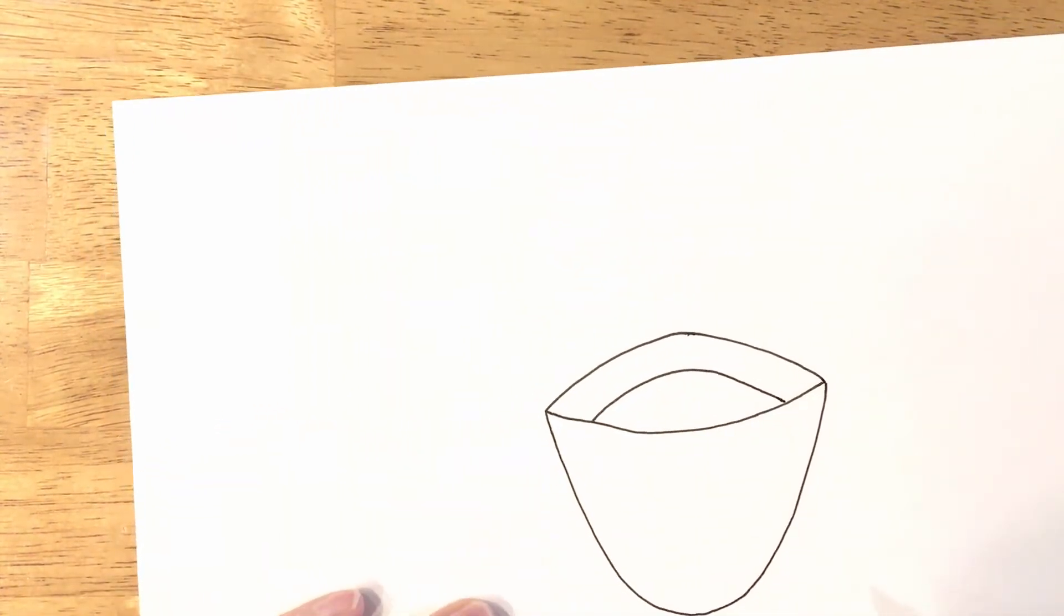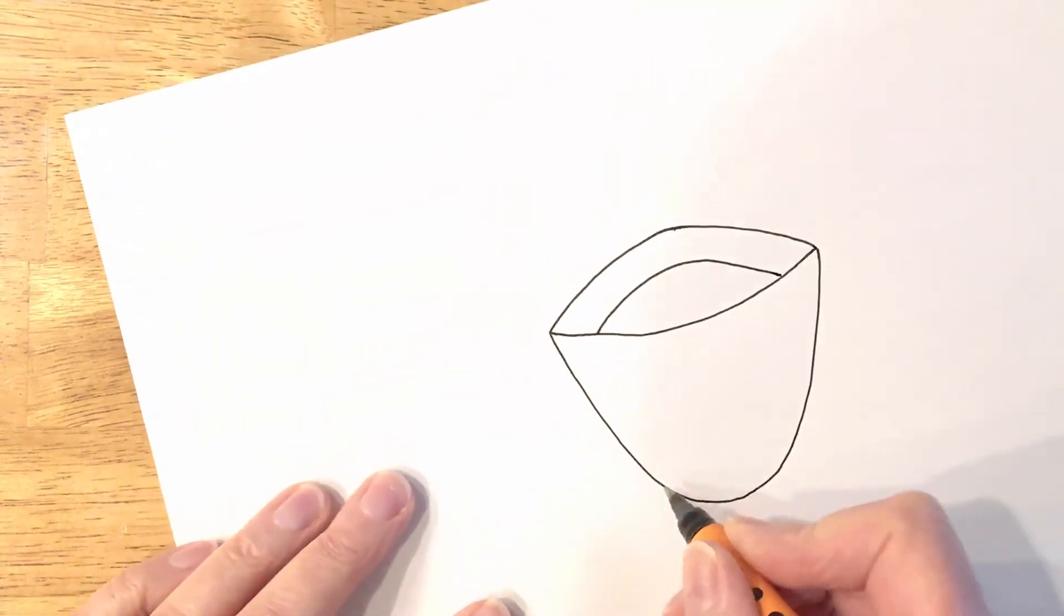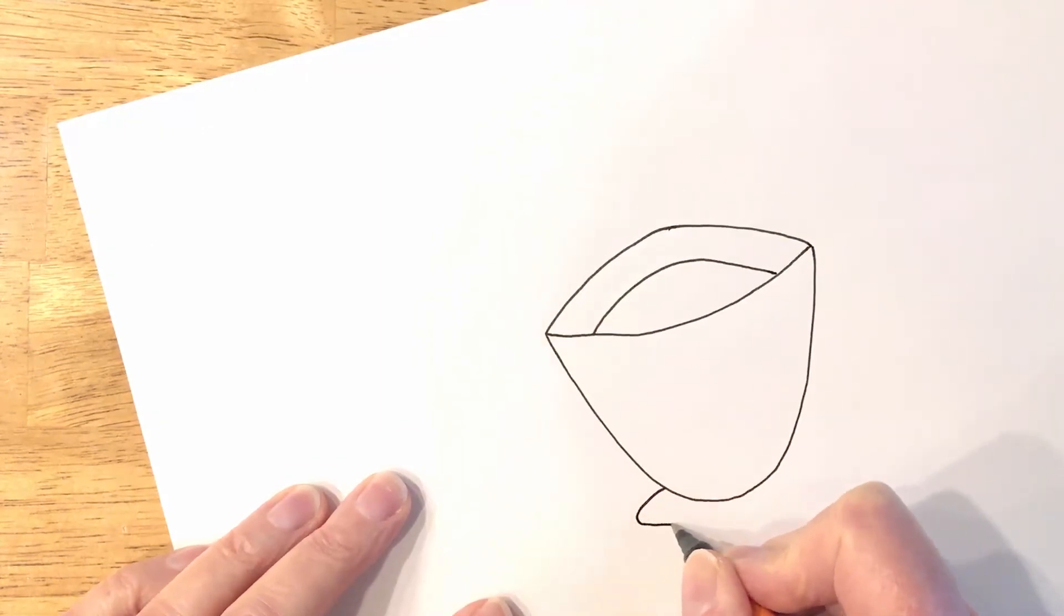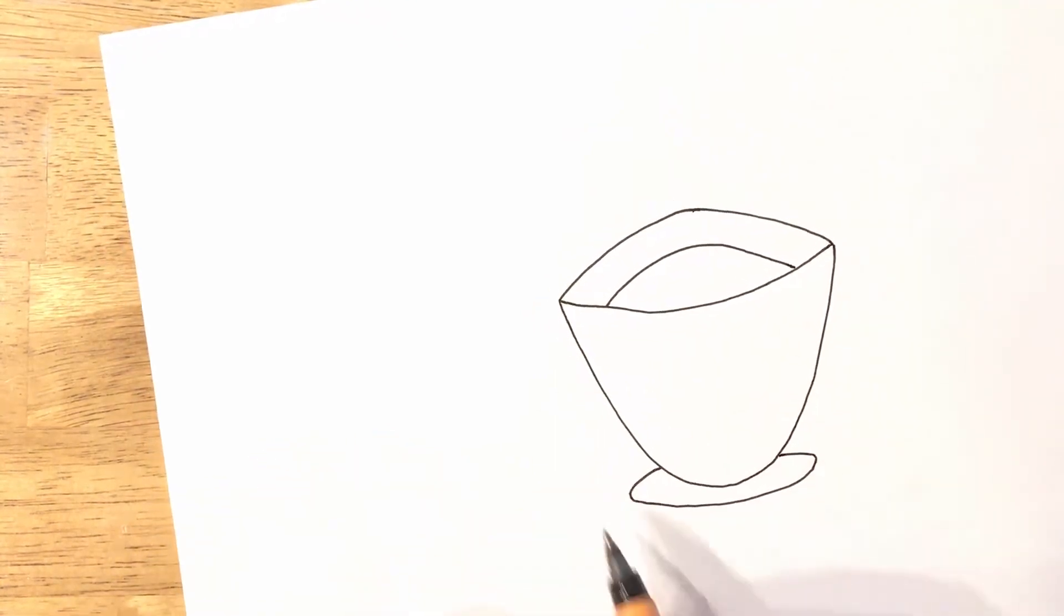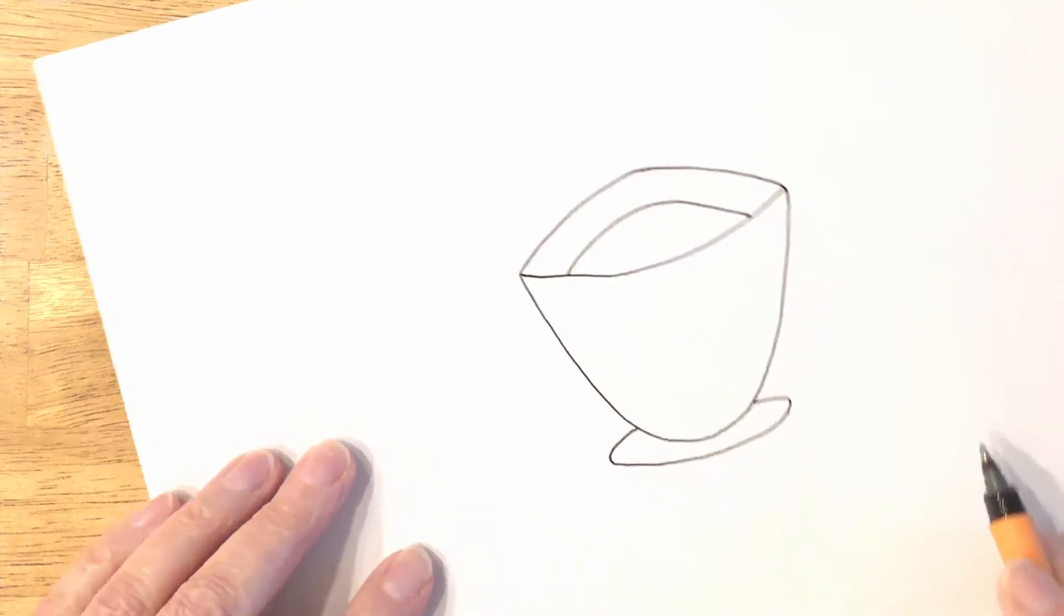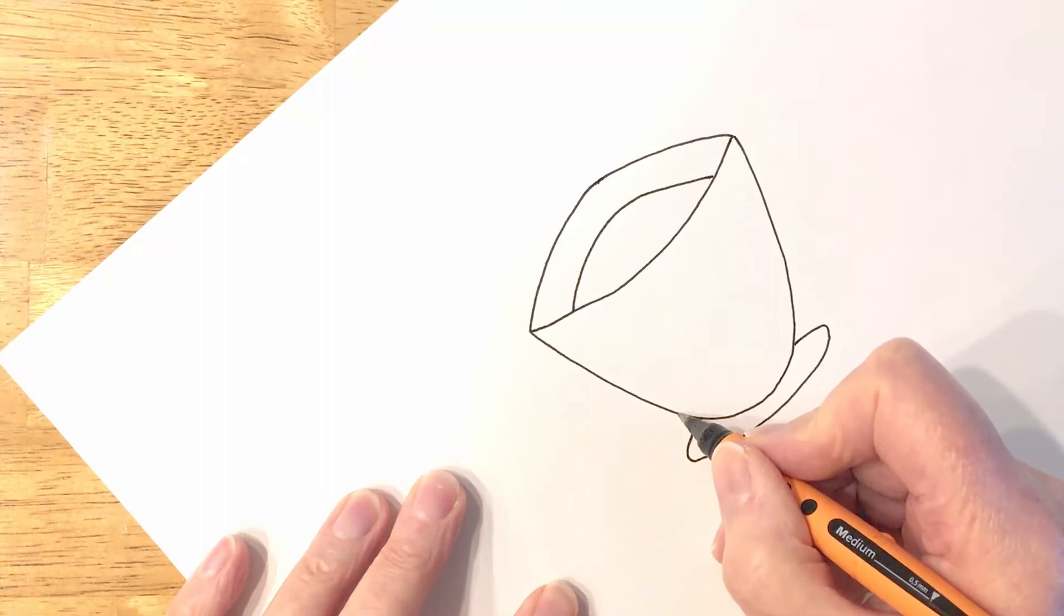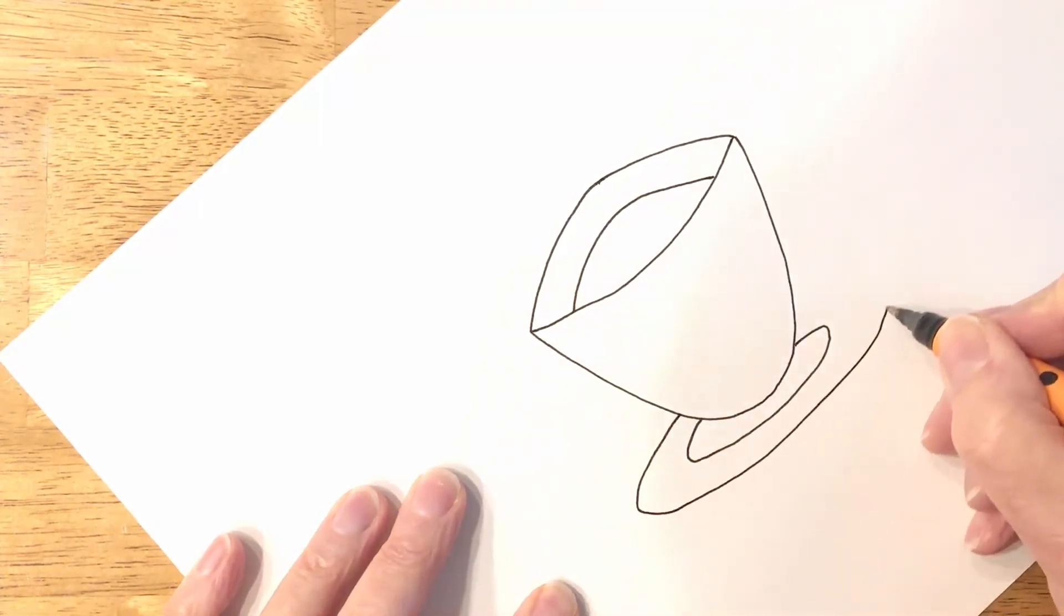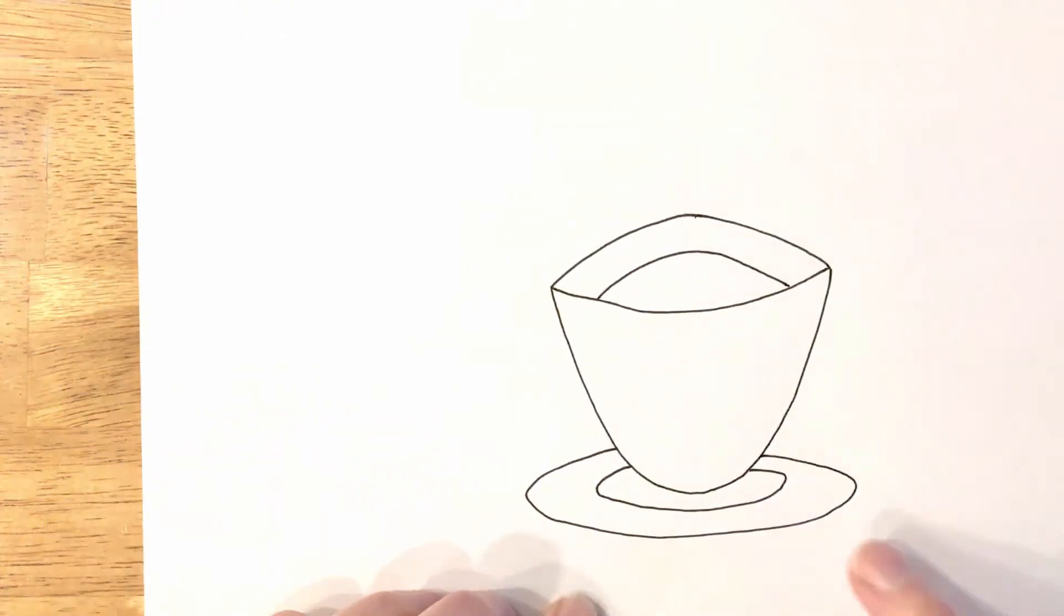For the saucer that the teacup is sitting on, it's just a couple of ovals. So if you think in terms of drawing an oval, you should be good to go. So that's one oval, and it's going to be a much bigger one, but I'm going to use this one as a guide as I draw it. Again, turning the paper around just makes it a little bit easier to draw. So there's my saucer for my cup.